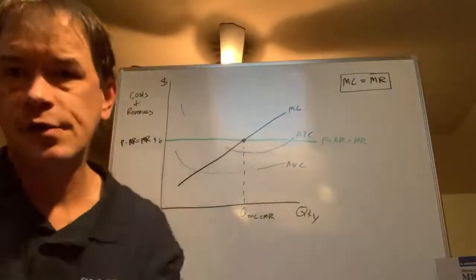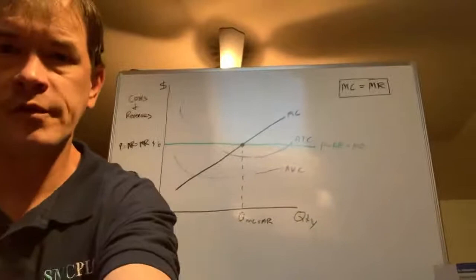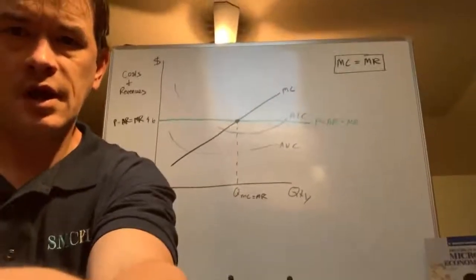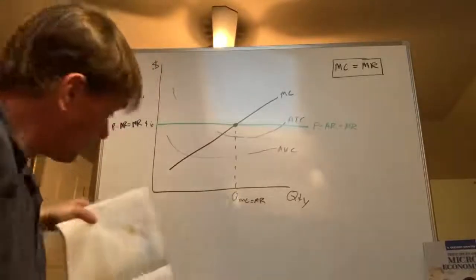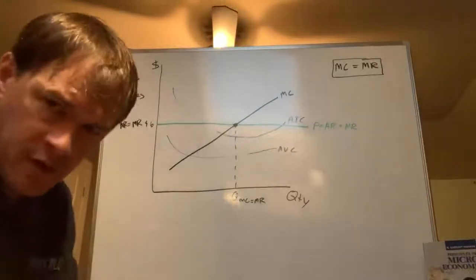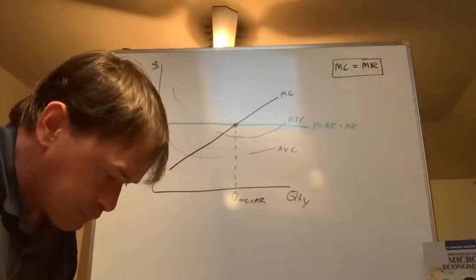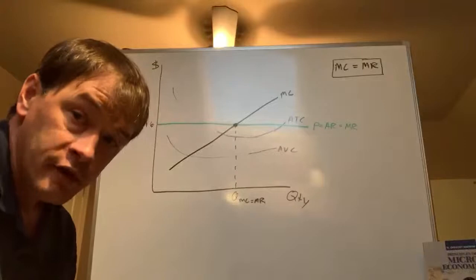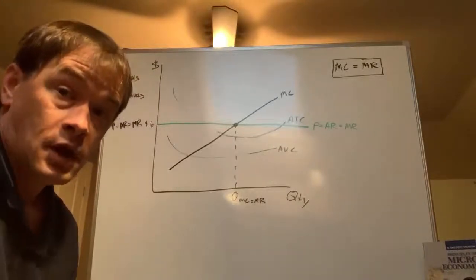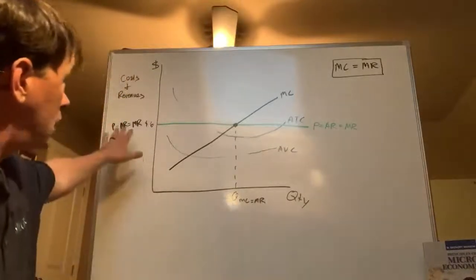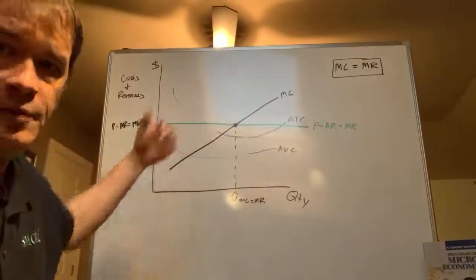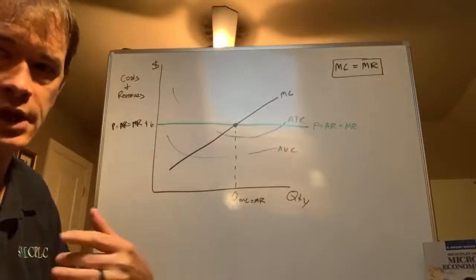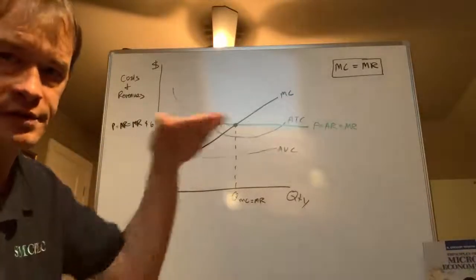Welcome back. This is lecture two in chapter 14, firms in a competitive market. We have a graph on the board, very reminiscent of figure one in your reading. We're going to manipulate it a little bit. What we're looking at is a graphical representation of our table from lecture one. We have a flat marginal revenue line in green because we're in a competitive market where all products are identical and no one has market power.